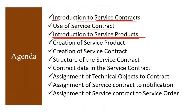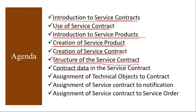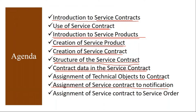We'll understand why service products are used and their significance. Then we will create a service product in the system, followed by creation of a service contract. We'll understand the structure of the service contract, contract data, assignment of technical objects like equipment or functional location to the contract, assignment of service contract to notification, and assignment of service contract to service orders.